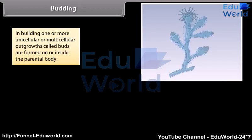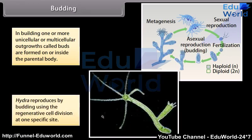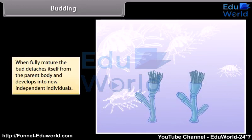In budding, one or more unicellular or multicellular outgrowths called buds are formed on or inside the parental body. Hydra reproduces by budding using regenerative cell division at one specific site. When fully mature, the bud detaches itself from the parent body and develops into a new independent individual.